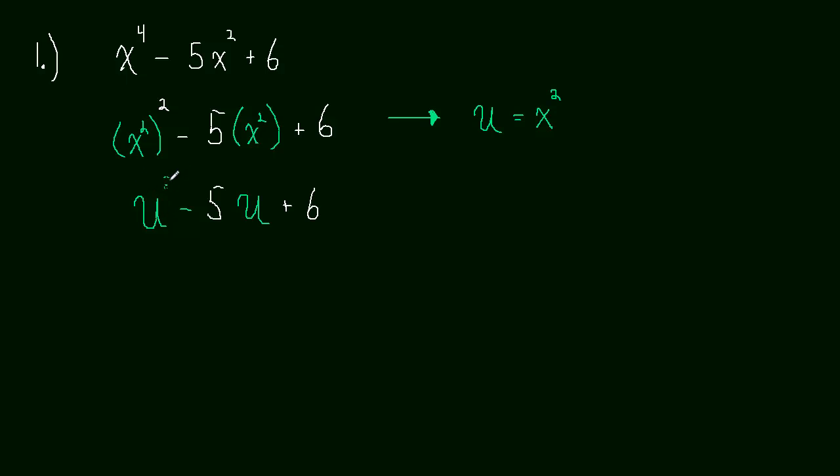So let me erase this. This should be in white if we're really being particular about the color coding. And now we can factor this pretty easily. What are the factors of 6 that add up to negative 5? Well, we have negative 2, negative 3, and that's actually our answer right there. So when we factor this, this will be u minus 2 times u minus 3.